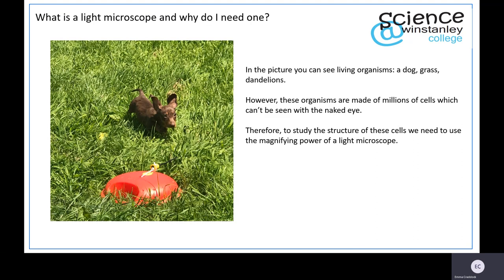So what is a light microscope and why do I need one? In the picture you can see living organisms: a dog, grass, dandelions, clover, and many different organisms. However, these organisms are made of millions of cells which cannot be seen with the naked eye.